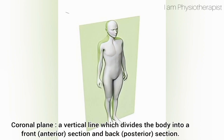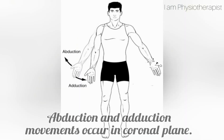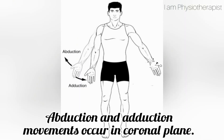Coronal plane: a vertical line which divides the body into a front anterior section and a back posterior section. Abduction and adduction movements occur in the coronal plane.